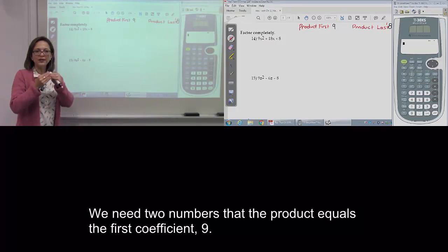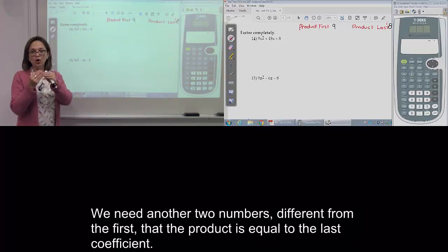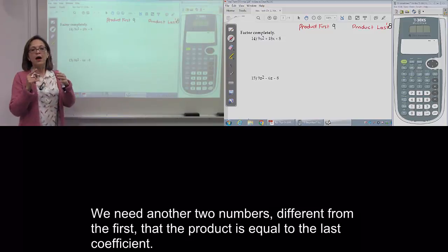We need two numbers whose product equals the first coefficient, 9, and two different numbers whose product equals the last coefficient.